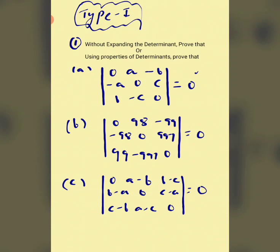In all these questions we have to prove that the value of the determinant will be zero. The question may say: without expanding the determinant — meaning without opening it using co-factors — we have to use properties to show the determinant equals zero. All these questions are exactly the same in nature.